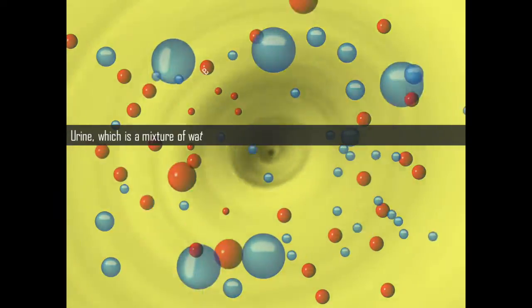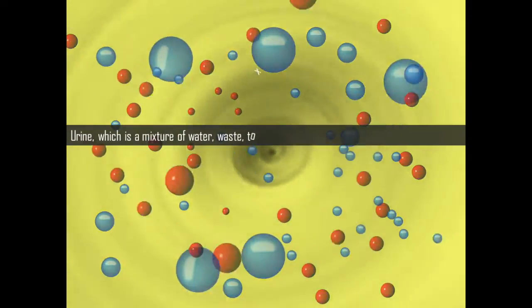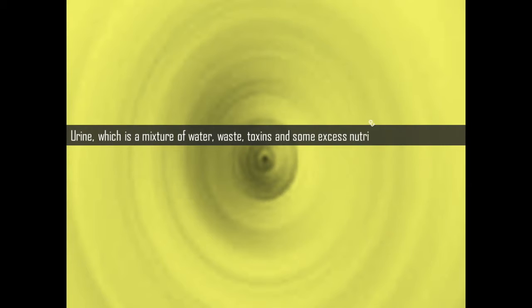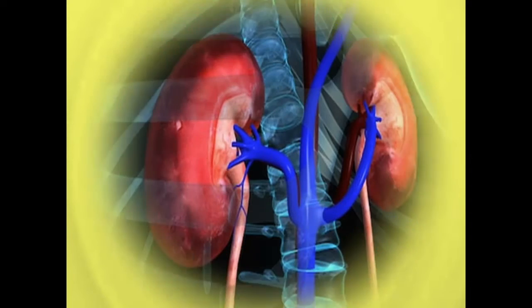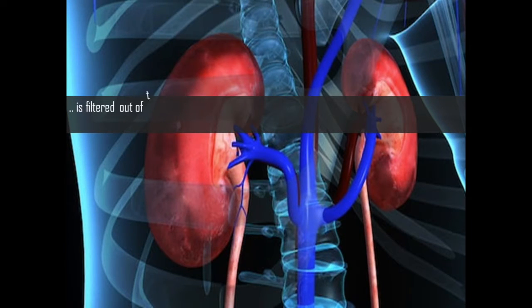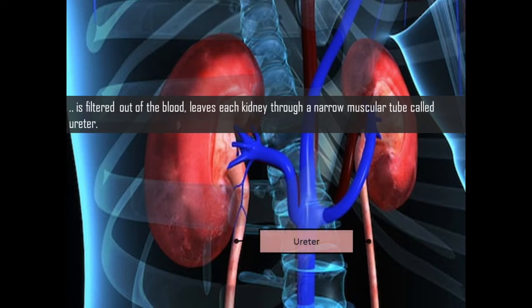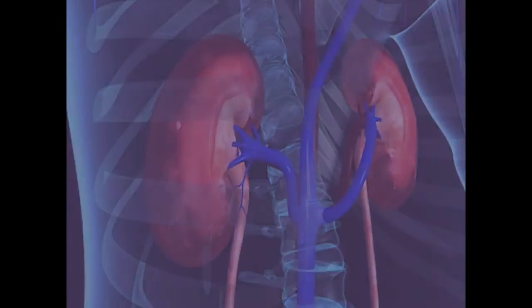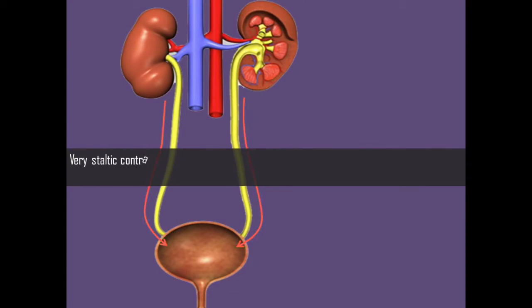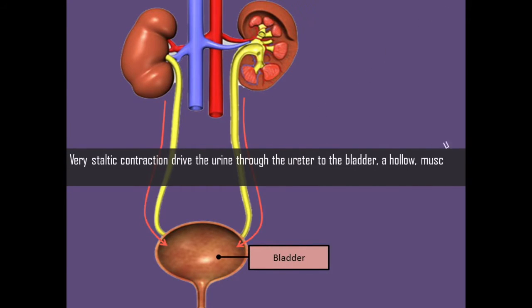Urine, which is a mixture of water, waste, toxins, and some excess nutrients, is filtered out of the blood and leaves each kidney through a narrow muscular tube called the ureter. Peristaltic contractions drive the urine through the ureter to the bladder, a hollow muscular chamber that collects and stores urine.